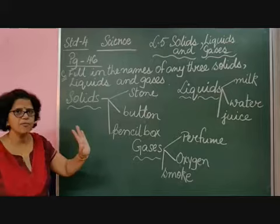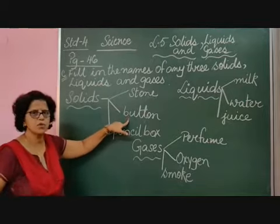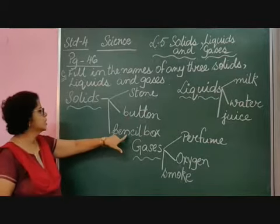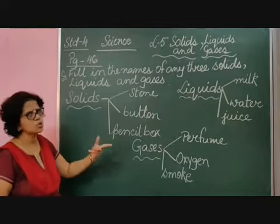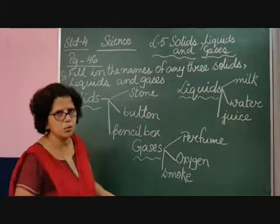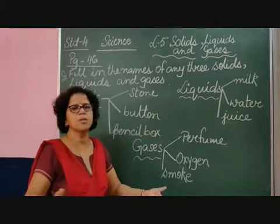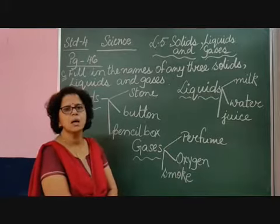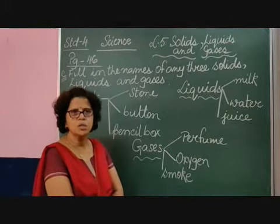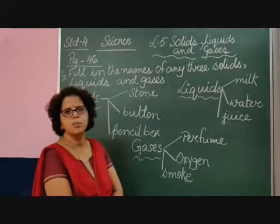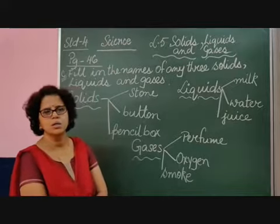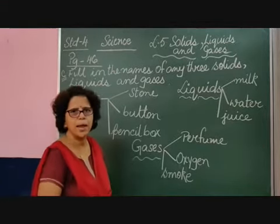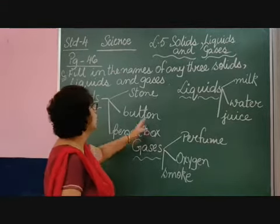For solids, I have written: stone, button — the button on your dress or shirt — and pencil box. You can write your own choice: table, chair, house, buildings, any fruit, any vegetable, a book, notebook, pen, or pencil — anything like that.